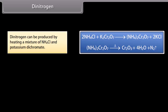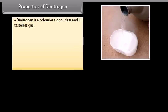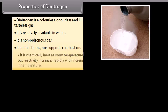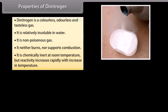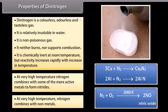Dinitrogen can also be produced by heating a mixture of NH4Cl and potassium dichromate. Very pure nitrogen is obtained by heating sodium azide or barium azide. Dinitrogen is a colorless, odorless and tasteless gas. It is relatively insoluble in water, non-poisonous, and neither burns nor supports combustion. It is chemically inert at room temperature, but its reactivity increases rapidly with temperature. At very high temperatures, nitrogen combines with active metals to form nitrides and with non-metals to form other compounds.